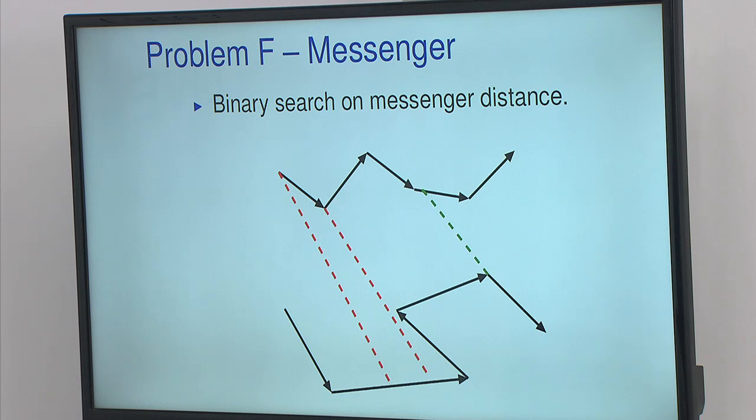Fortunately, it's enough to check only the points on the polylines of Alice where she can send it and the points of Bob where he can receive it. And if you just check all those points, then that would suffice.